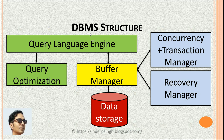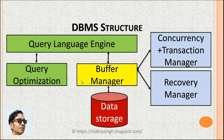Let me explain the DBMS structure with a diagram. DBMS is a software system that provides an interface between the users and the database. Starting from the bottom of the diagram, the data storage component stores data as tables. It interacts with the buffer manager, which stores frequently accessed data pages from the database. The buffer manager keeps track of which pages are in memory, reads pages from disk into its buffer cache, and writes modified pages back to disk.